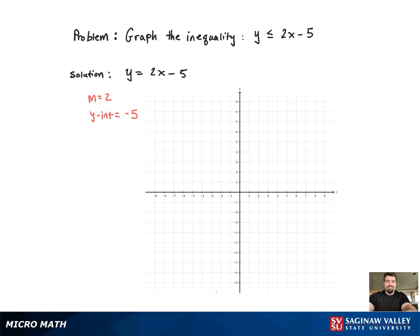Now, since it's less than or equal to, it's going to be a solid line. If it was just strictly less than, I would change it to a dotted line.